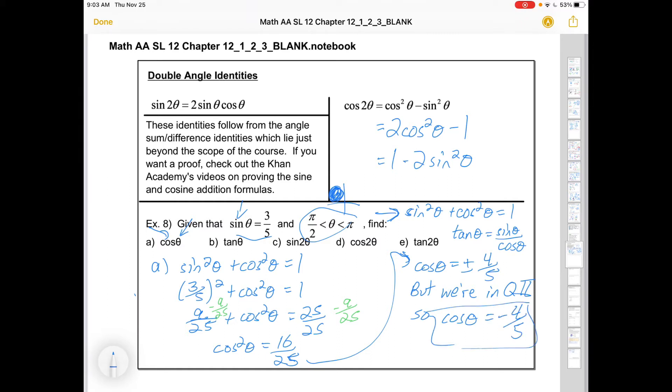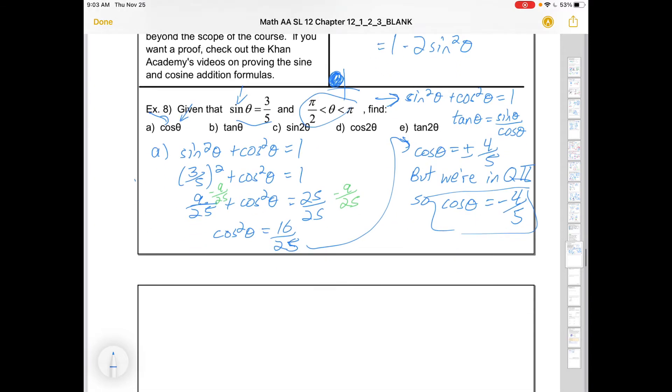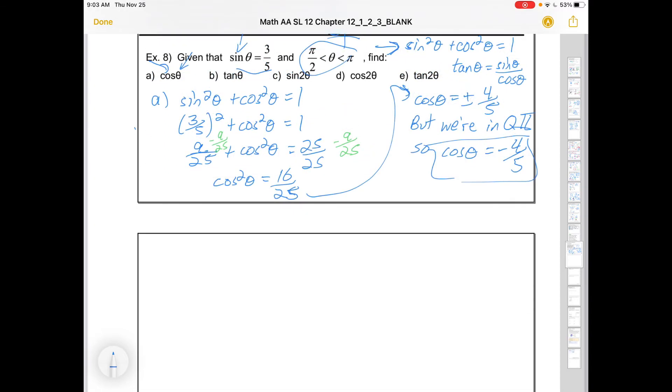Having that information is going to power the rest of the questions that we have. The rest of them should crumble fairly easily. The next part asks us to find tan θ. So tan θ, we have this identity, is just sin θ over cos θ. So it would be sin θ, which is 3/5, all over cos θ, which is -4/5.